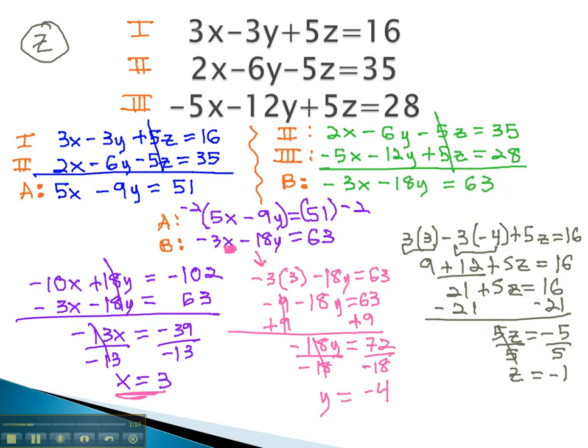We now have our solution, which we can give as an ordered triplet in alphabetical order, x, y, z: 3, negative 4, negative 1, is the solution to the system of equations.